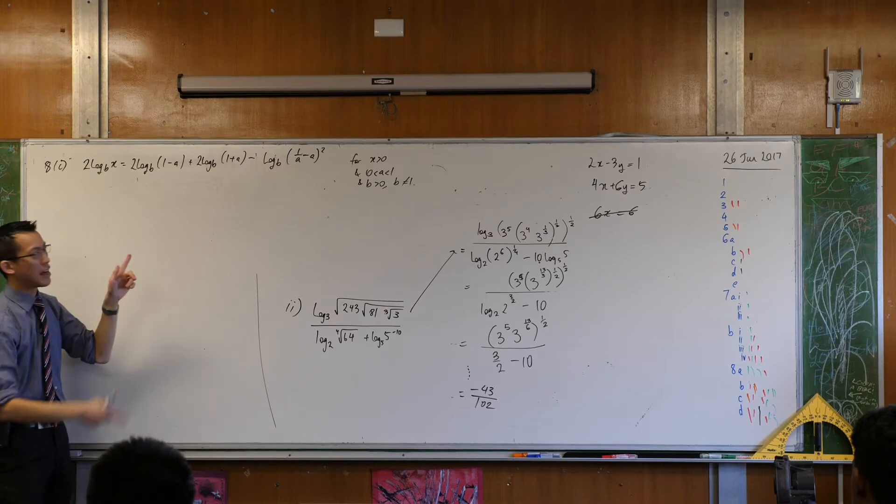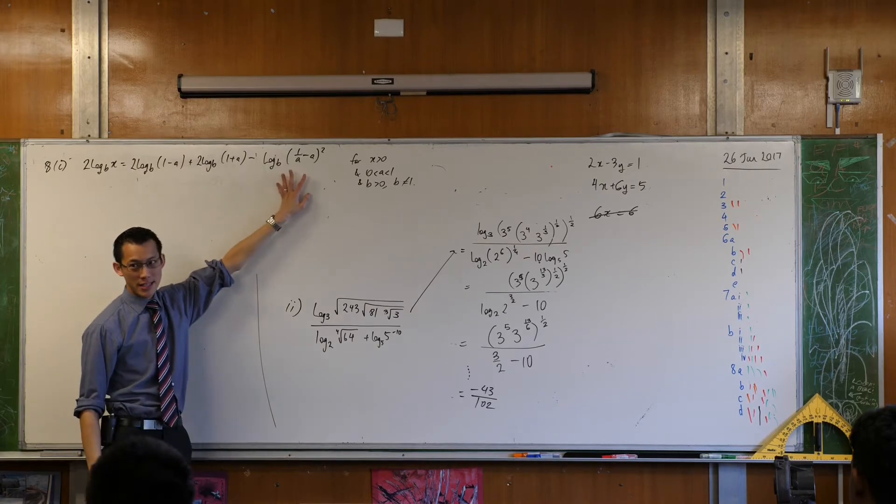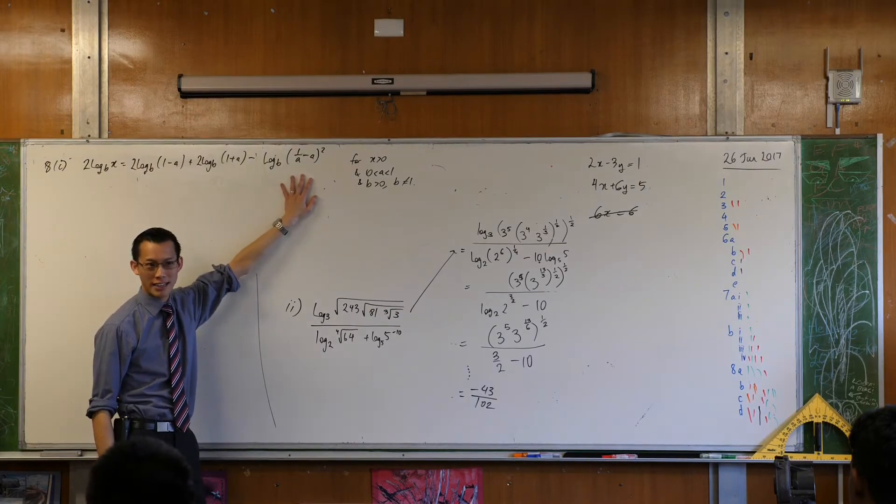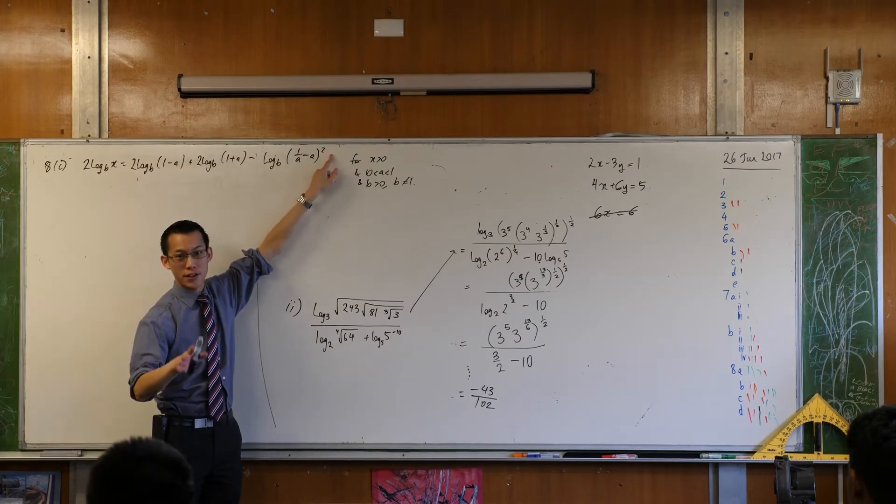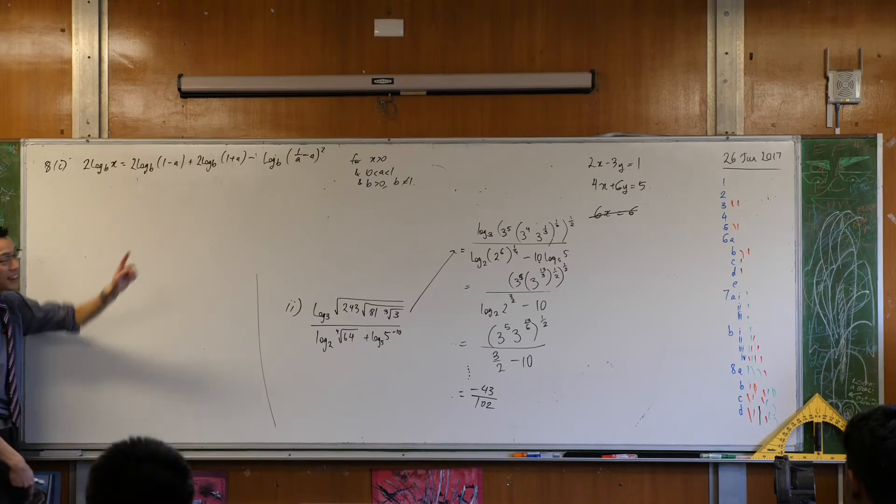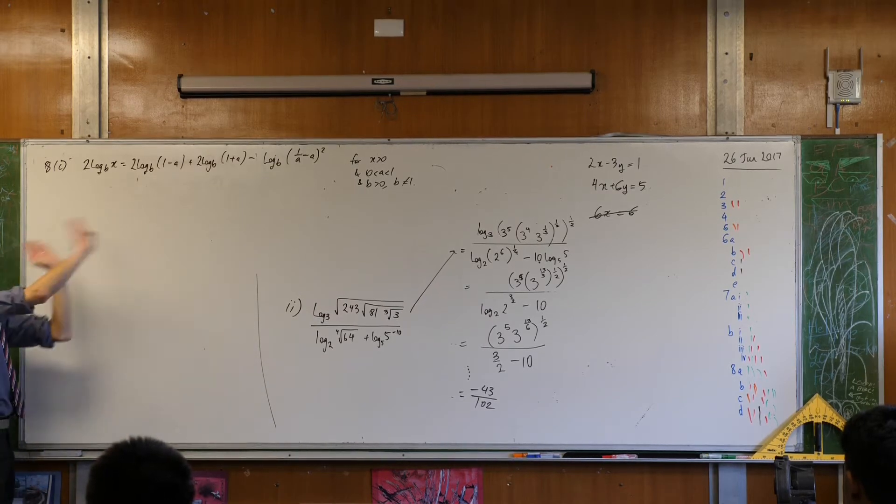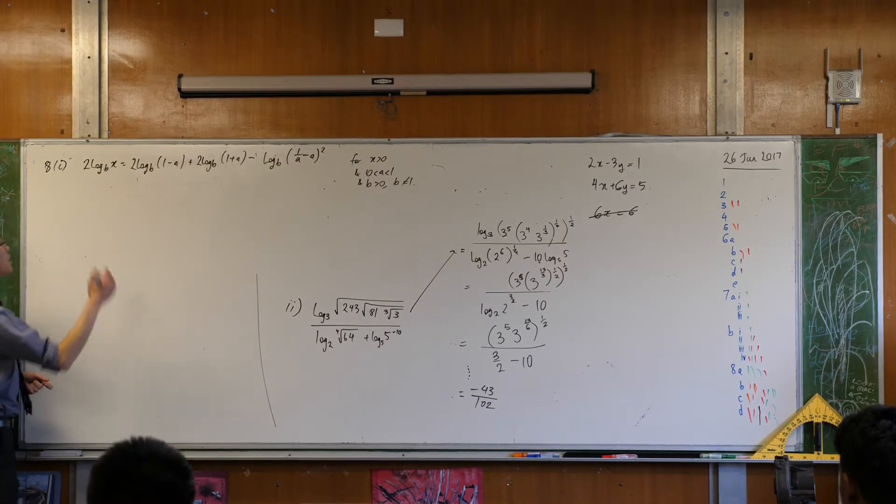Now we said the first three terms all have that 2, this term also has a 2, it's just hiding. Where is it? It's up in power. So the very first thing I should do is get that 2 out the front because then I can get rid of it across the board. So let me write that down.